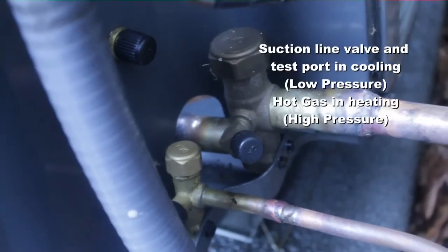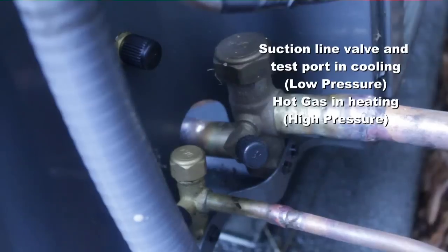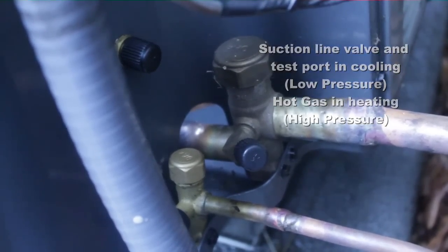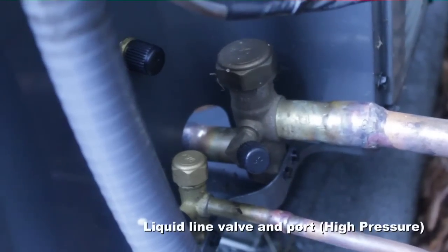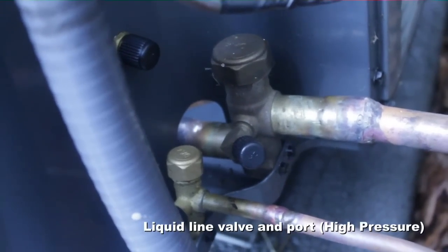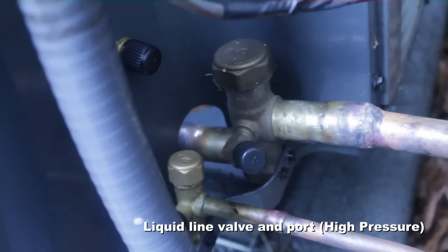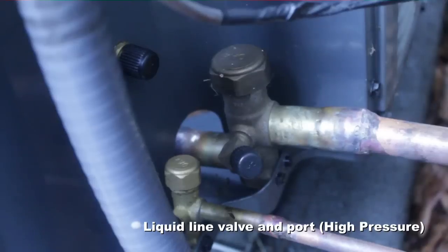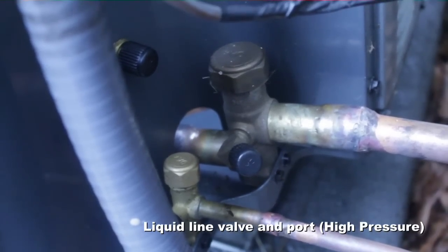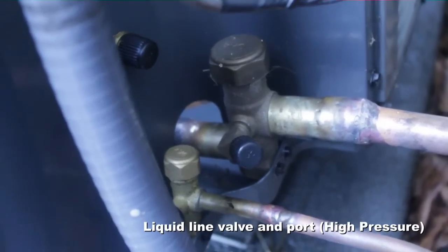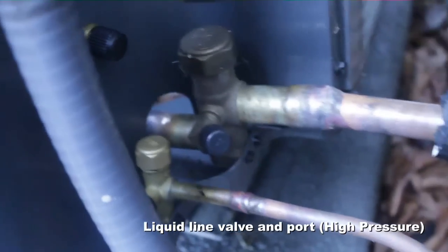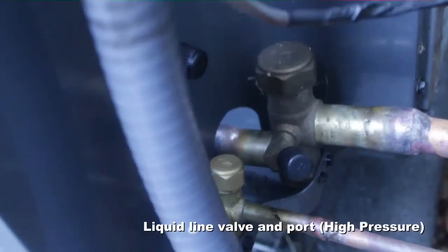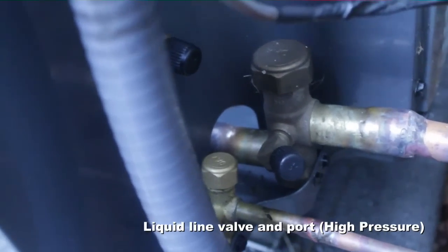In air conditioning, that is where vapor comes back to the heat pump from the evaporator as a cool vapor. On the bottom we have our liquid line. It is actually the liquid line in both cooling and heating. In cooling, the refrigerant circulates through the condenser outside, condenses to liquid, and flows to the evaporator through this line.